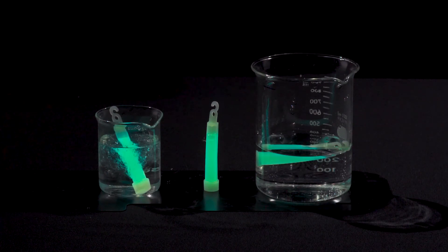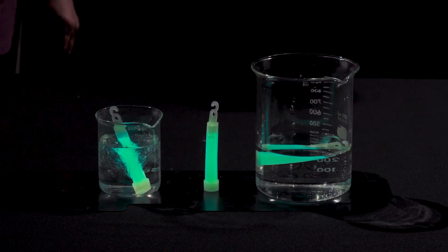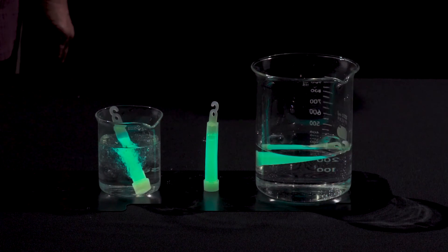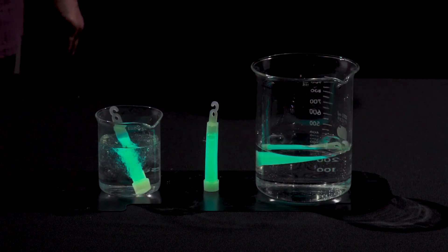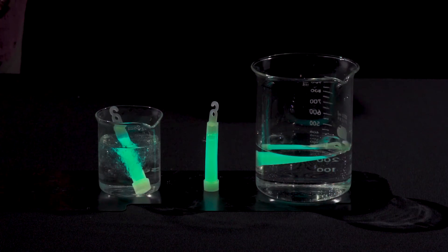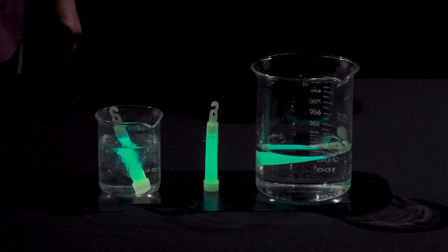So some of you may have heard that they last longer when you put them in the freezer, and that's because the chemistry slows down until you warm them back up, and then they get brighter again. They all have the same amount of chemicals in them, so the same amount of light comes out. Question is just how fast?